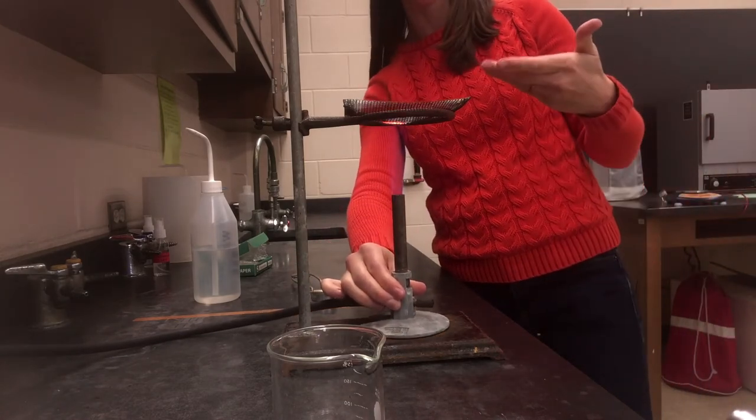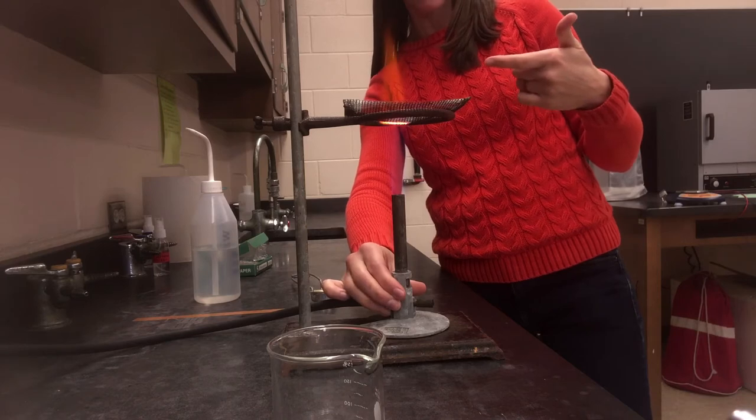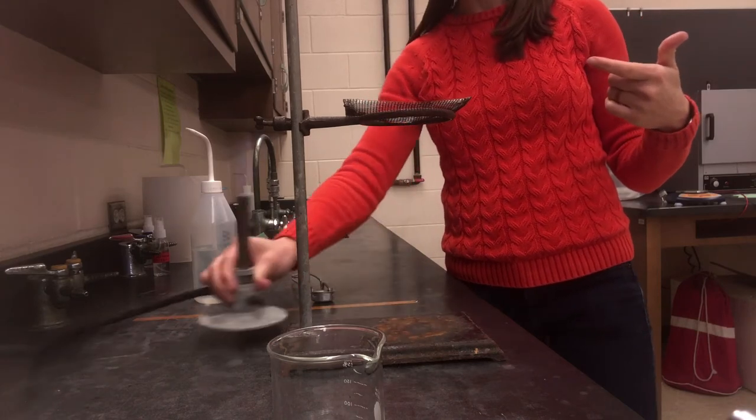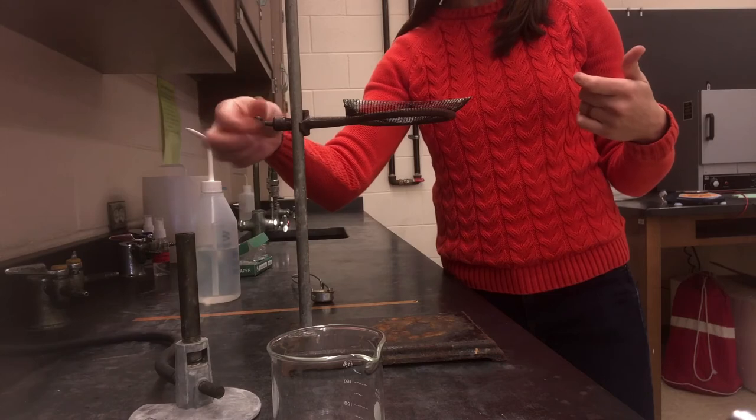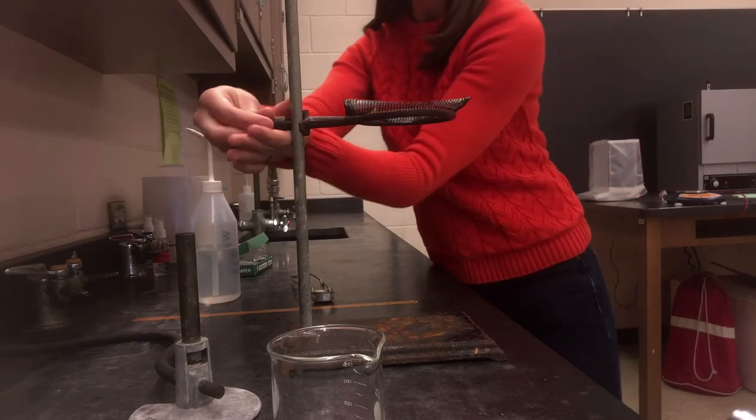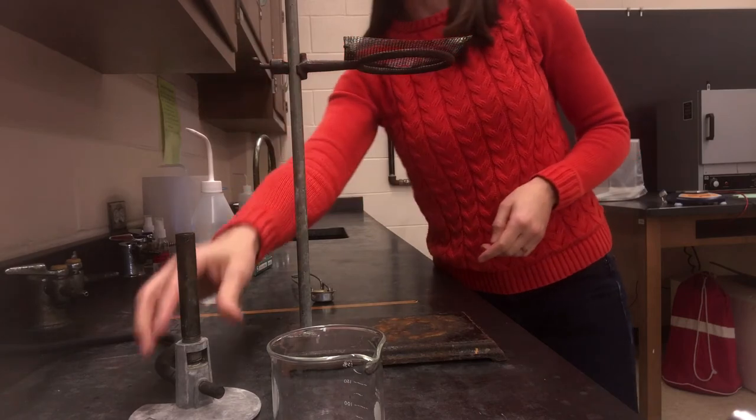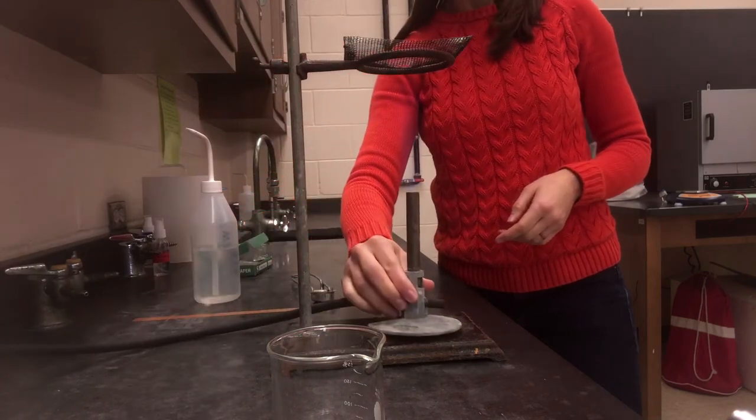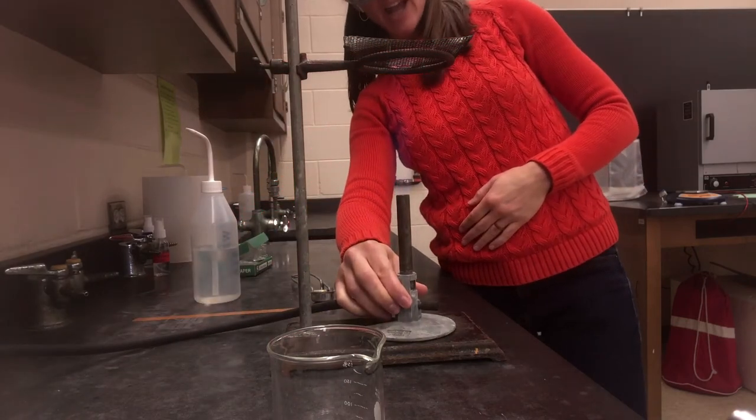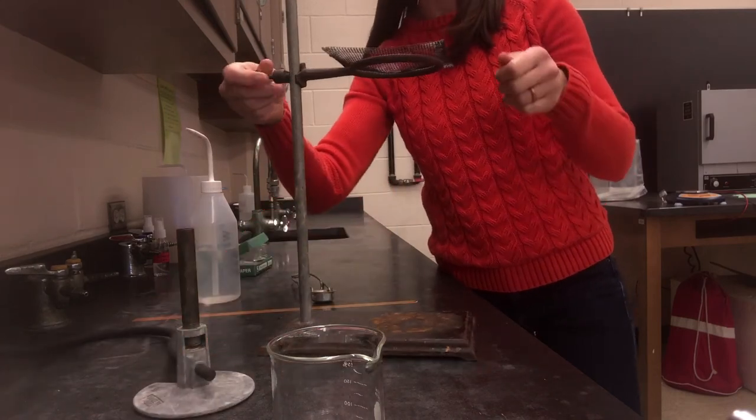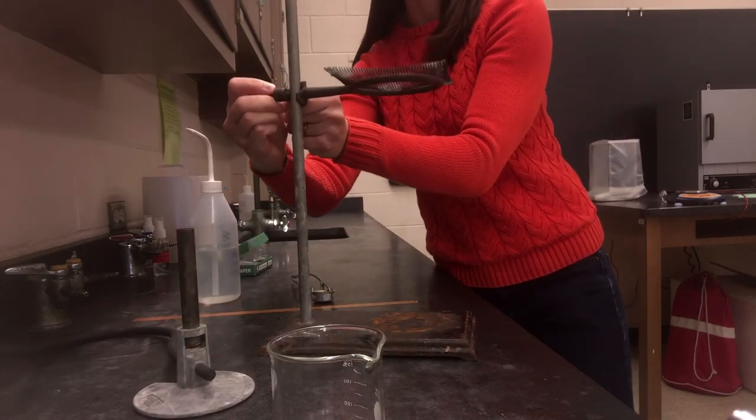So I'm going to move my Bunsen burner out of the way. Since it hasn't been heating at all for any period of time, I can actually raise the ring on the ring stand to adjust. You can tweak it a little bit until you get the height that you want. Do be cautious though—once you start heating, the area of the ring and the metal that was over the flame is going to be hot.